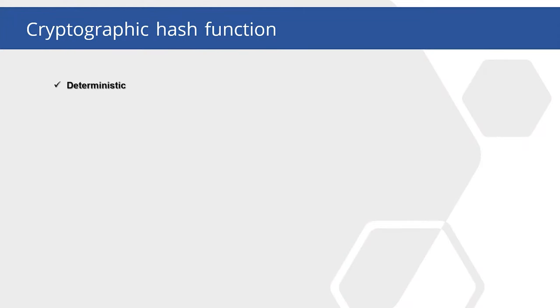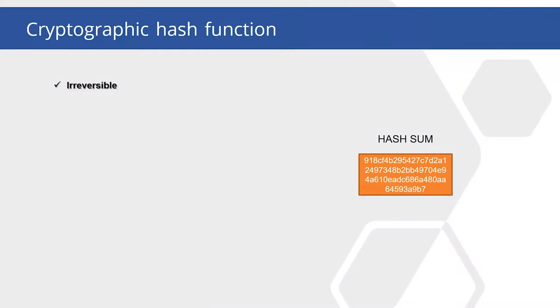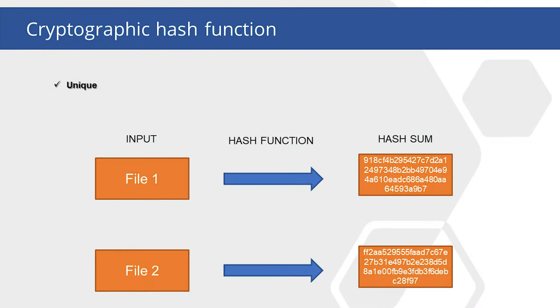Hash sum has three basic features. First, it's deterministic, which means you always get the same hash from the same piece of data when you apply the same hash function to it. Second, it's irreversible — a one-way function — which means it's impossible to retrieve the original data from the hash sum. When you see the hash sum, there is no way to practically understand what is hidden behind it. Third, practically no collisions are possible. The theory says they are possible, but there are myriads of combinations, so their occurrence is neglected in strong cryptographic functions. So hash is unique — two different inputs of data will give distinctly different hashes.